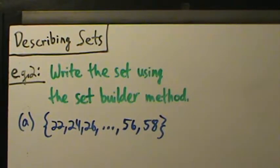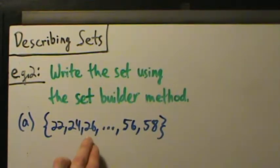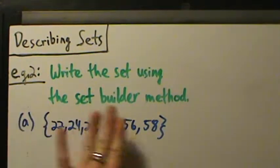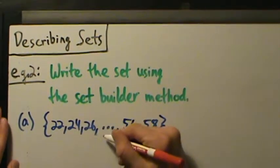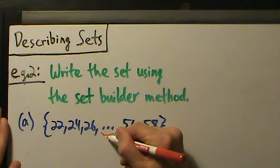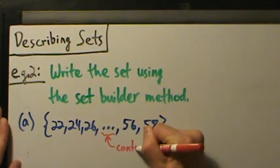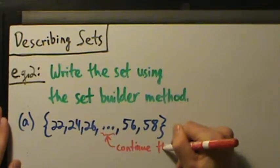So for part A, we have the set written in the listing method: 22, 24, 26, dot dot dot, 56, 58. Remember, these three dots mean 'continue the pattern.'